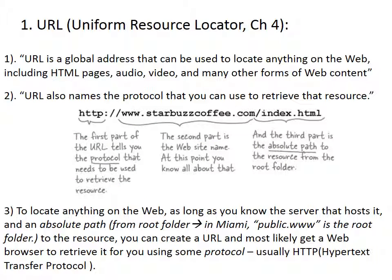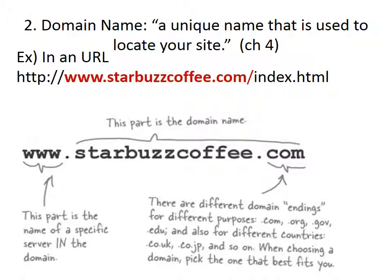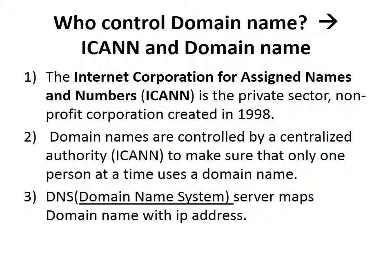URL stands for Uniform Resource Locator. In a URL, you will see HTTP as the protocol, domain name, and file path from the root folder. Domain name is a unique name used to locate your site — you have to register it. ICANN, a private-sector nonprofit corporation created in 1998, controls domain name registration for proper usage.